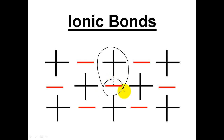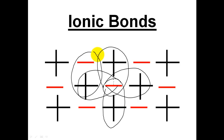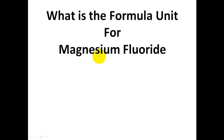That attraction continues around — the negative attracts the positive on that side and the same way over here. These are all examples of ionic bonds throughout the whole picture. An ionic bond is an attraction between a positive and negative ion resulting from the transfer of electrons. So let's go to our objective for today.